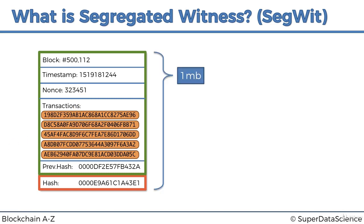In Bitcoin there's a limit — a one megabyte limit for the size of the block. This was included in the original design. There are speculations about the reasons for that. One main reason is that if you have a block size which is too small, you can't include many transactions in it, and you're going to have bandwidth problems — people are going to be waiting too long to include their transactions.